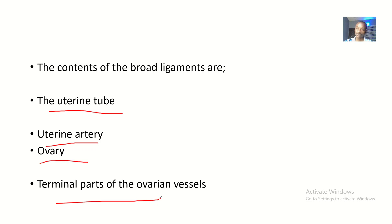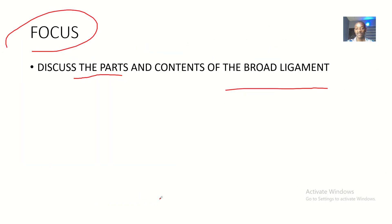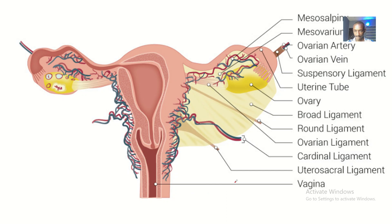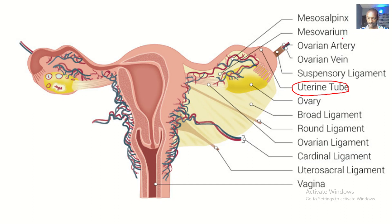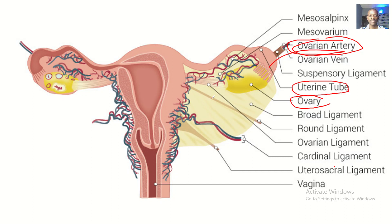Once more: uterine tube, uterine artery, ovary, and terminal parts of ovarian vessels. On the diagram, this is the uterine tube, here is the ovary, and the terminal parts of ovarian vessels. Note that the uterine artery is the only structure not labeled on this diagram.